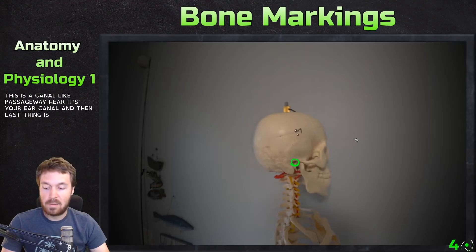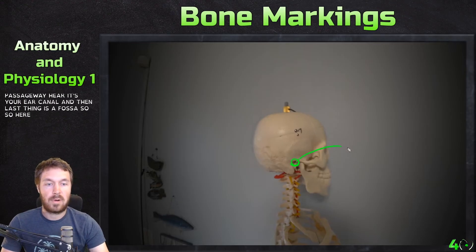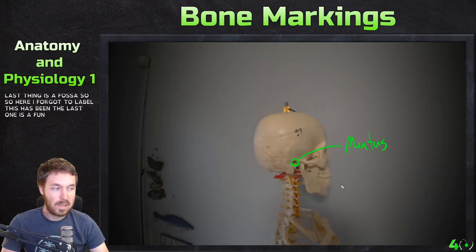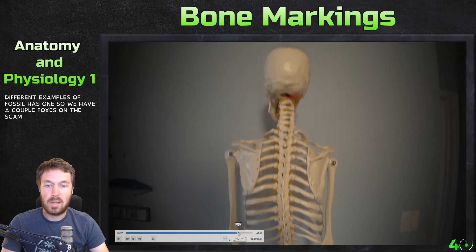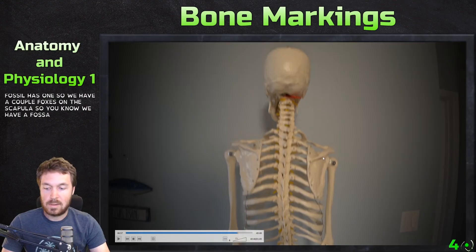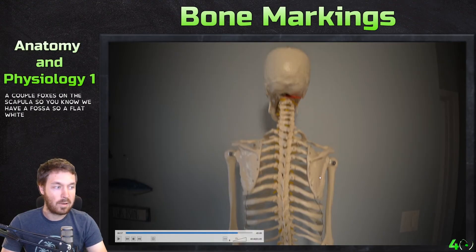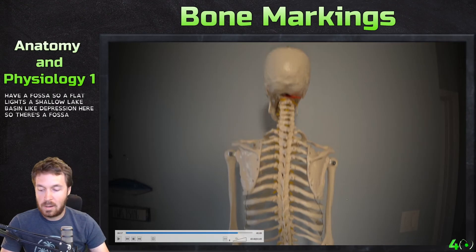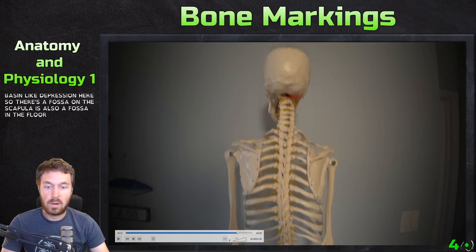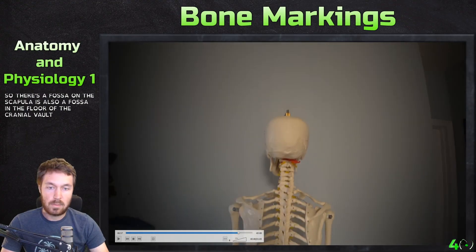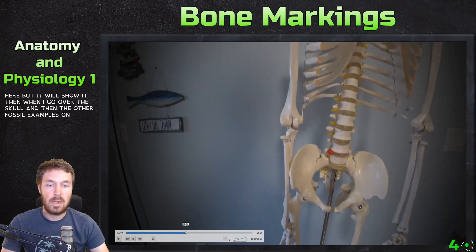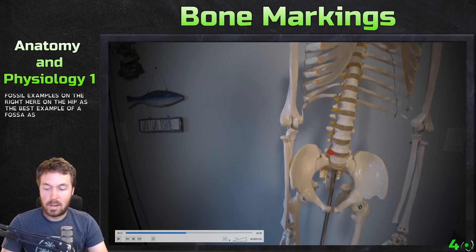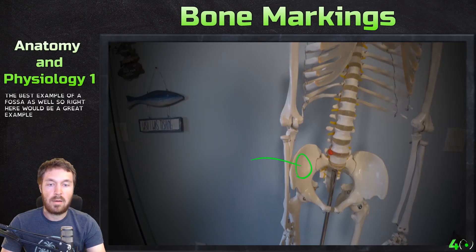The last passageway marking is a fossa, which is a shallow basin-like depression in a bone. There are a couple of examples: there's a fossa on the scapula — a shallow basin-like depression there. There's also a fossa in the floor of the cranial vault, which we'll show when covering the skull. And right here on the hip is another great example of a fossa.